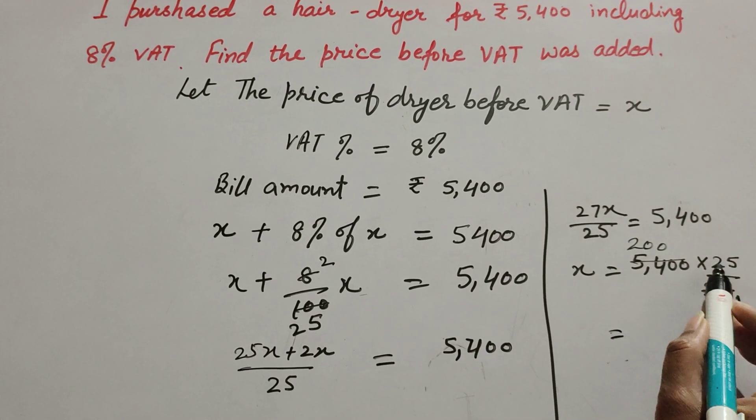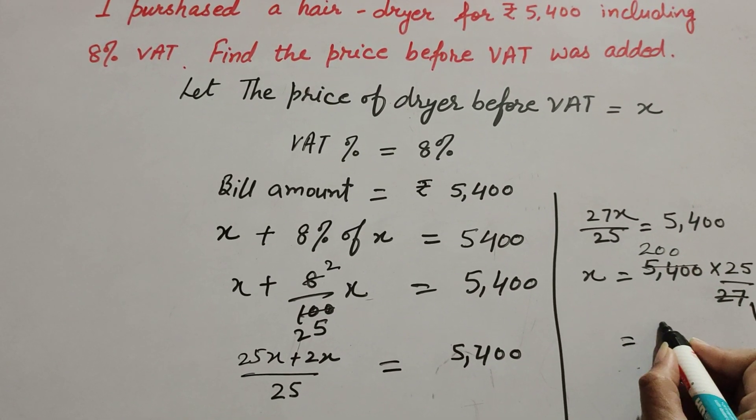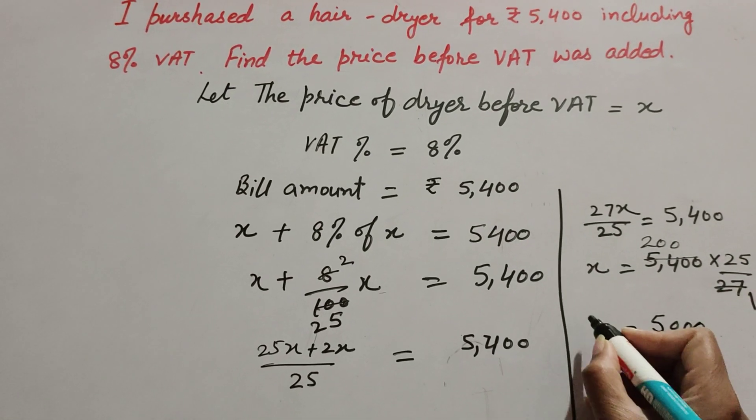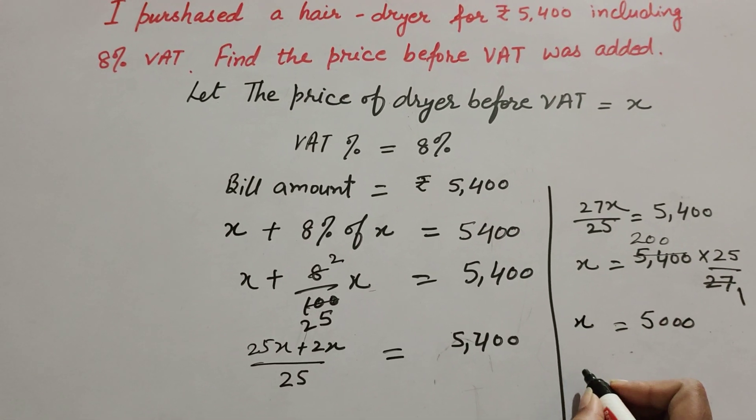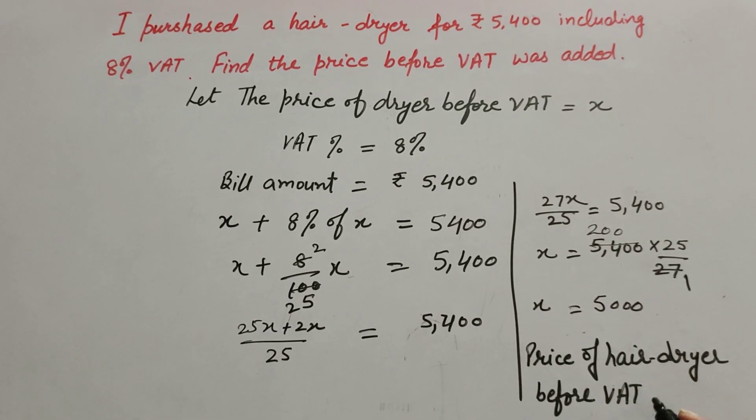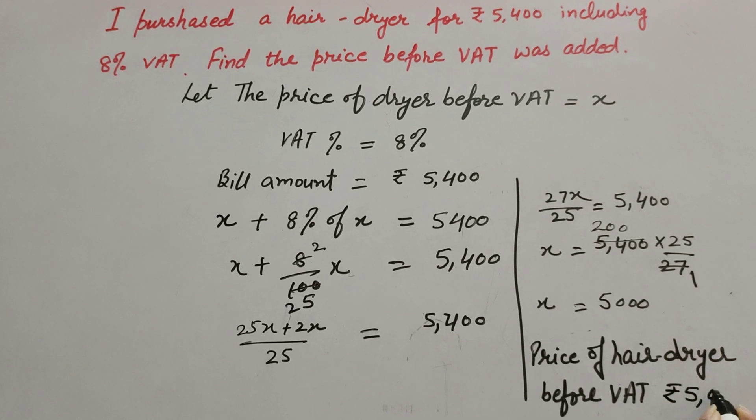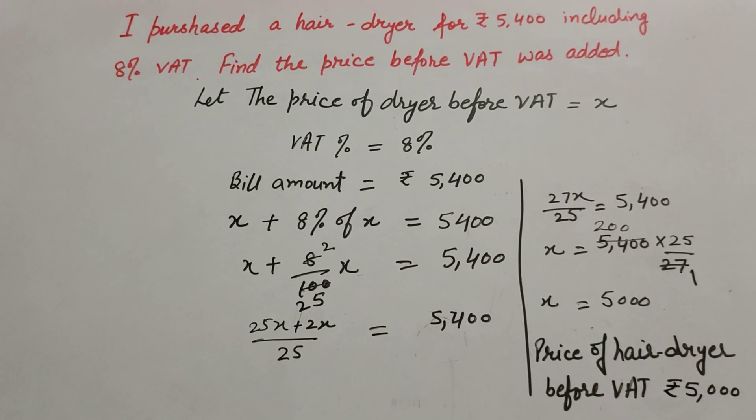Then 200 multiplied by 25 equals 5,000. So the price of the hairdryer before VAT is ₹5,000. Thanks for watching, like and share my video, and subscribe to my YouTube channel.